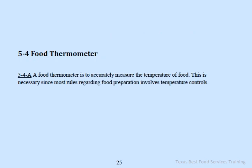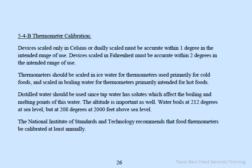A food thermometer is used to accurately measure the temperature of food, which is necessary since most food preparation rules involve temperature controls. For thermometer calibration: devices scaled only in Celsius must be accurate within one degree of the intended range of use, while devices scaled in Fahrenheit must be accurate within two degrees.